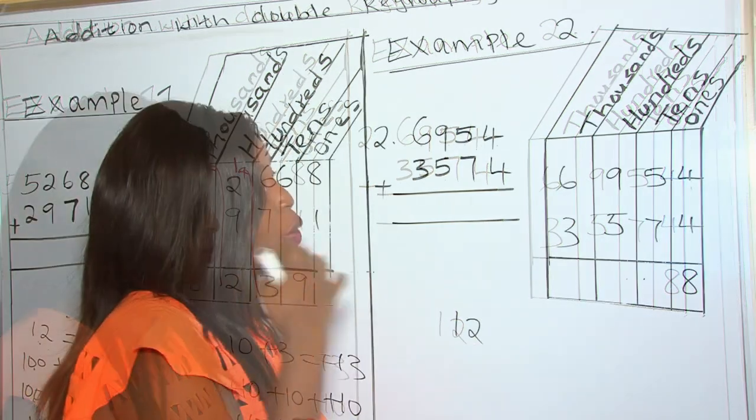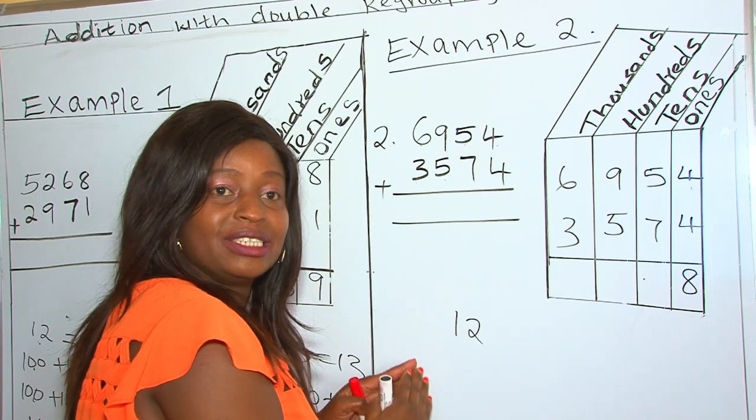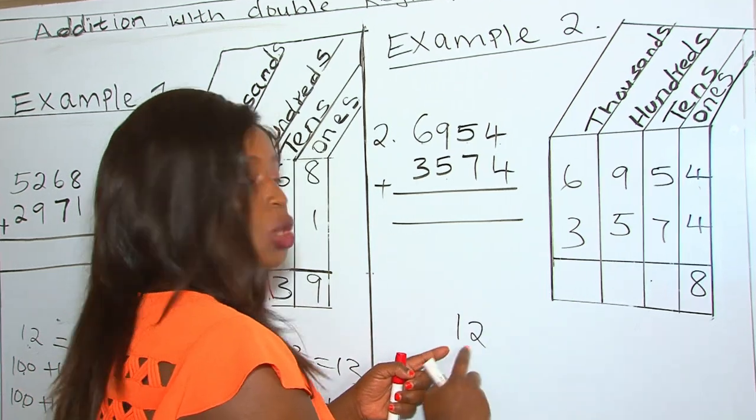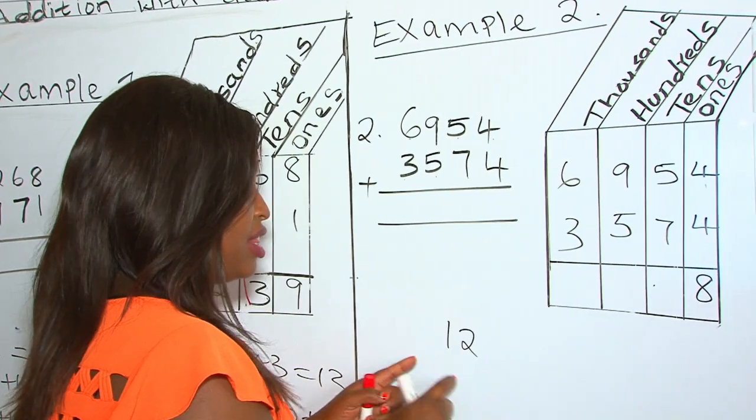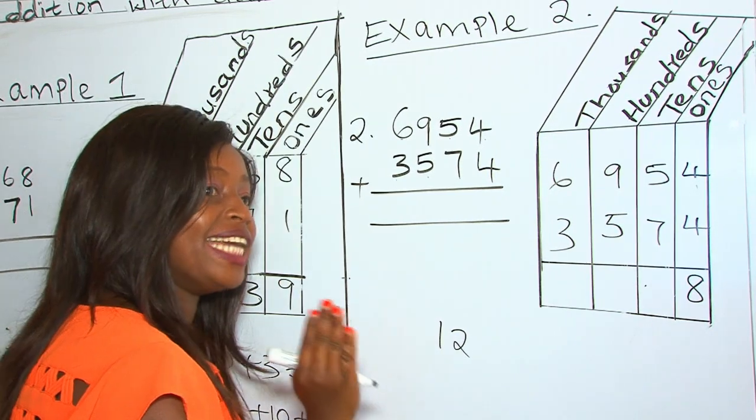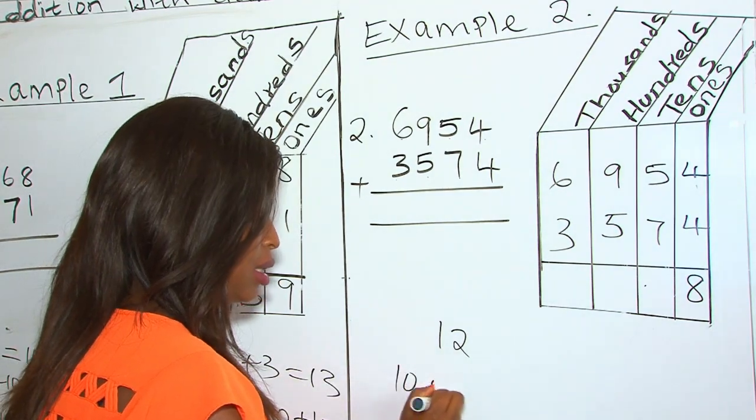What do you do? We regroup tens into 100 and tens. These are 12 tens. Therefore, in 12 tens, we have 10 tens. 10 tens.